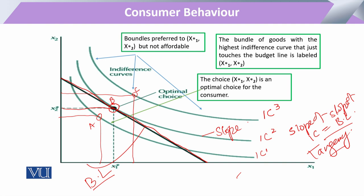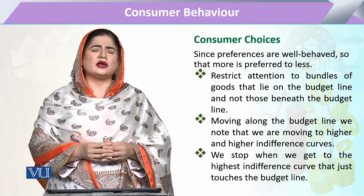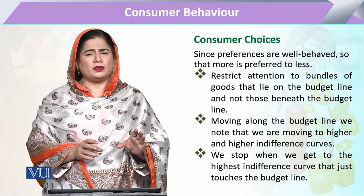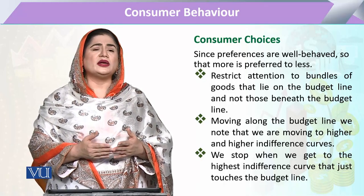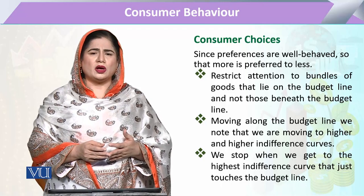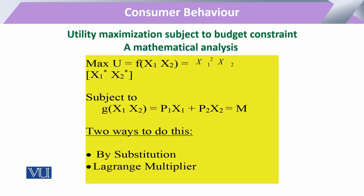Within the budget affordability, we identify the bundle that gives maximum utility. To solve this problem, we need to consider the available bundles, note the current market prices to draw the budget line, and observe the slopes of both curves. When the highest level indifference curve is attained, that is where we stop — that is the maximum level. However, graphical representation alone is not sufficient in economics.